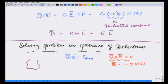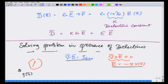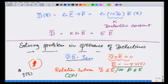Now let us look at a dielectric material given somewhere, and some charge distribution rho(r) which produces an electric field. So divergence of D equals rho_free. But now I need to relate what the polarization inside this material is to D or E, and that relation between D and E, or P and E, is called the constitutive relation. We have already written this relationship for linear dielectrics.